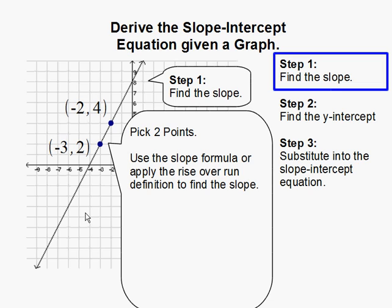Let's start with the slope formula. Our two points are negative 2 comma 4 and negative 3 comma 2, and the slope formula is the difference in y, so 4 and 2, over the difference in x, negative 2 and negative 3.